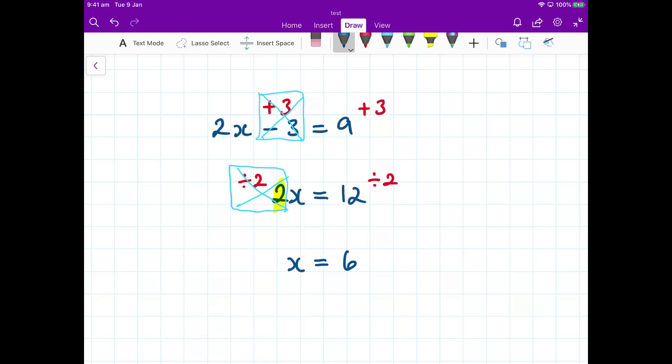Now that I've got my answer, I should check my results. So 2 times 6, well, that's 12. 12 take away 3 is 9, so it works.